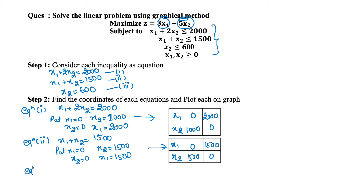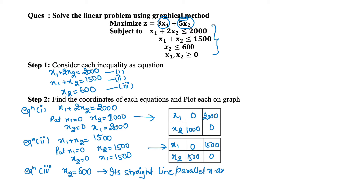For equation 3, x2 equals 600. Basically, it is a straight line parallel to the x-axis when x2 equals 600. So I have three line equations, and these will show that my plot will be in the first quadrant.